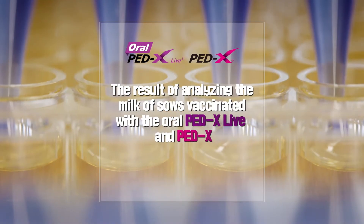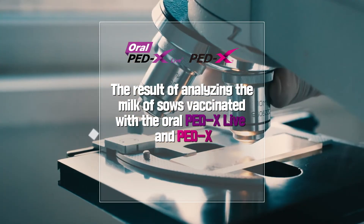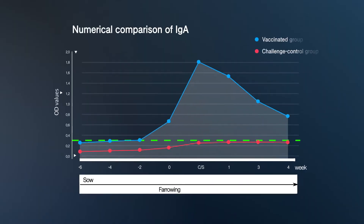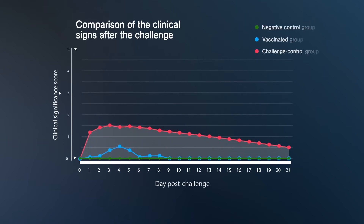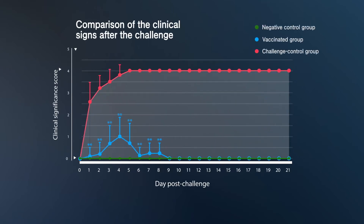An analysis of milk of a sow inoculated with Oral PEDX Live and PEDX shows that the IgA antibody, the core material for virus prevention, was much higher than that of the control group. The comparison of clinical signs after virus infection also revealed that the vaccinated group had only mild symptoms and recovered soon. Seven days later, they weighed about the same as healthy pigs.